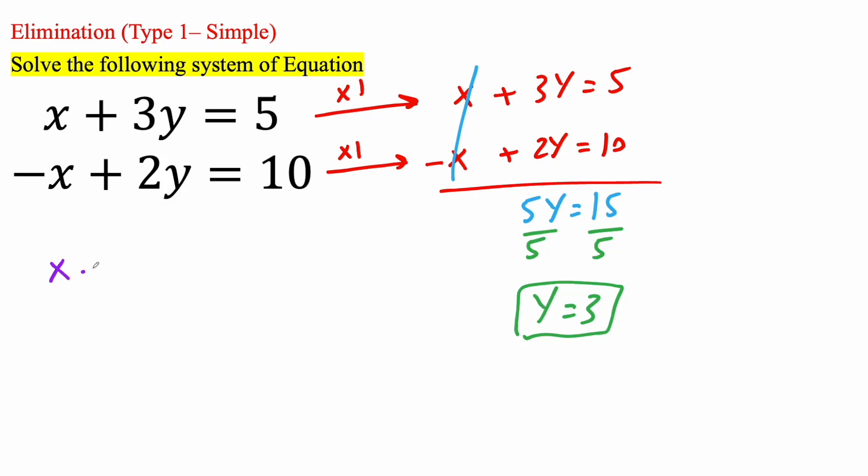So I'm going to say I have x plus 3 times y. Instead of saying y, let's just replace y with 3. So 3 times 3 is equal to 5. So we have x plus 3 times 3 is 9 is equal to 5.